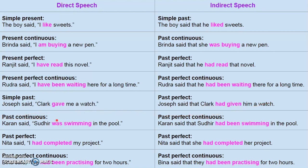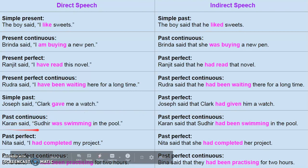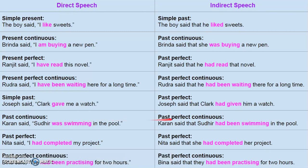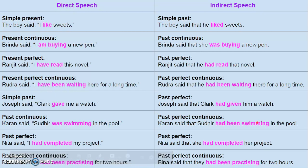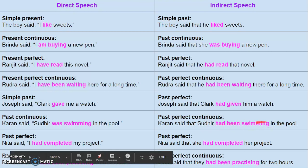Past continuous will change into past perfect continuous. For example, 'Karan said Sudhir was swimming in the pool.' This changes to: 'Karan said that Sudhir had been swimming in the pool.' So 'had been swimming' is in past perfect continuous form.